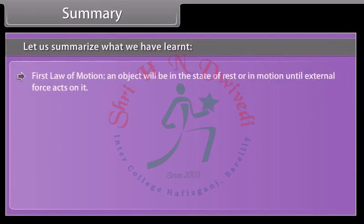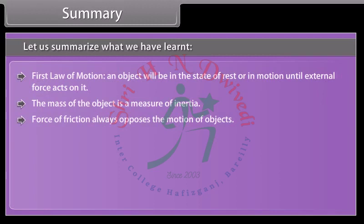First law of motion: an object will be in the state of rest or in motion until external force acts on it. The mass of the object is a measure of inertia. Force of friction always opposes the motion of objects.